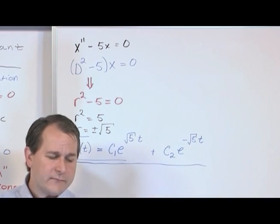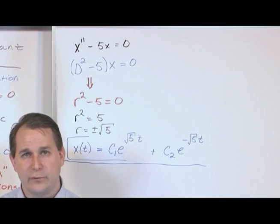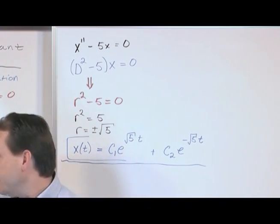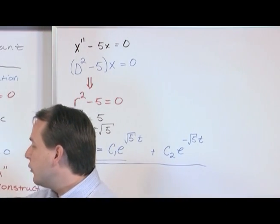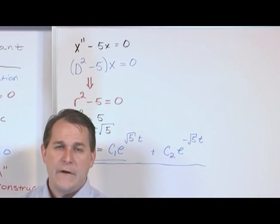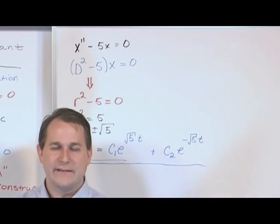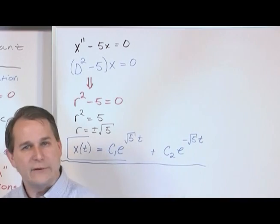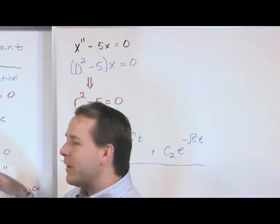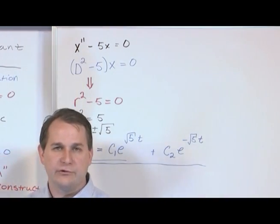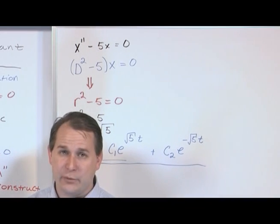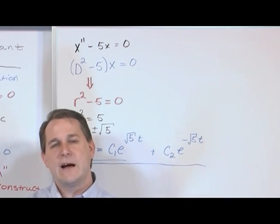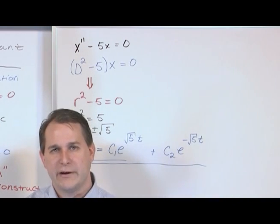If you ever get an imaginary root of your polynomial, which can happen, then the next section after this one, when we're going to have imaginary roots, I'll tell you how to construct those solutions for the imaginary roots. That's why the title of this section was constant coefficients, real roots. The real roots means this polynomial has real roots. This is how you construct that solution. If you have an imaginary or complex root, we'll teach you how to construct those in another section because it's not very hard, it's just cluttered if you try to present it all at one time.